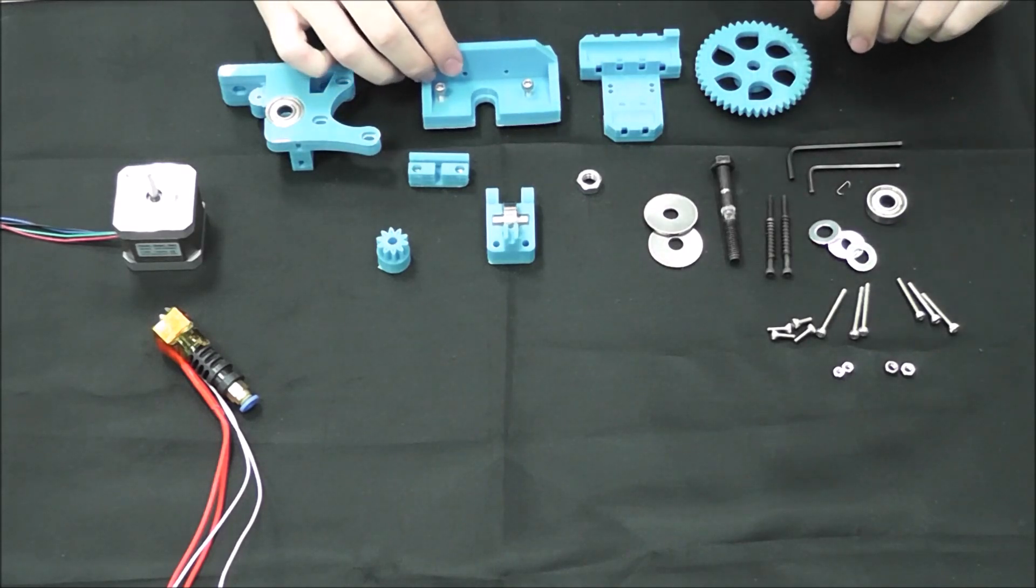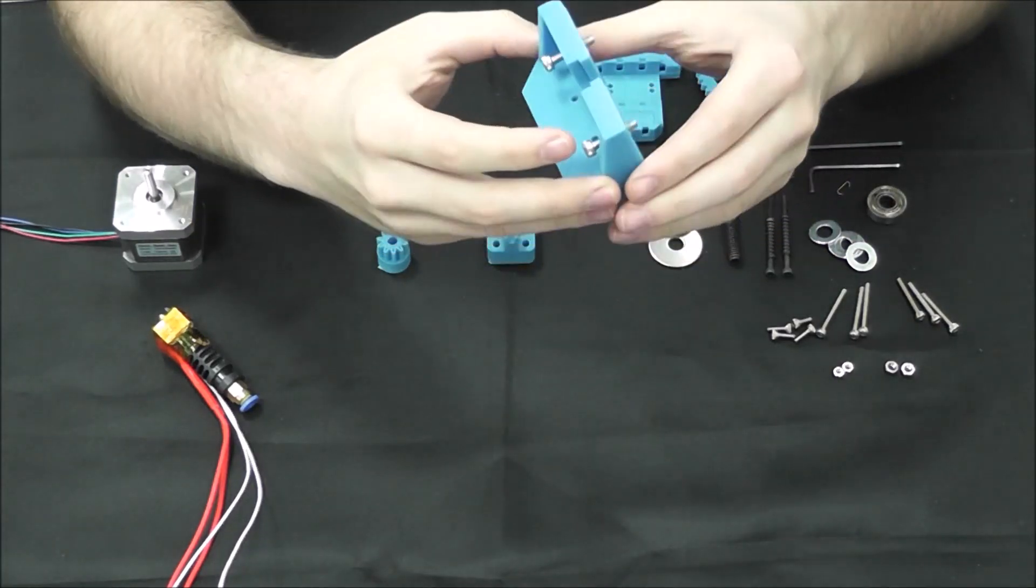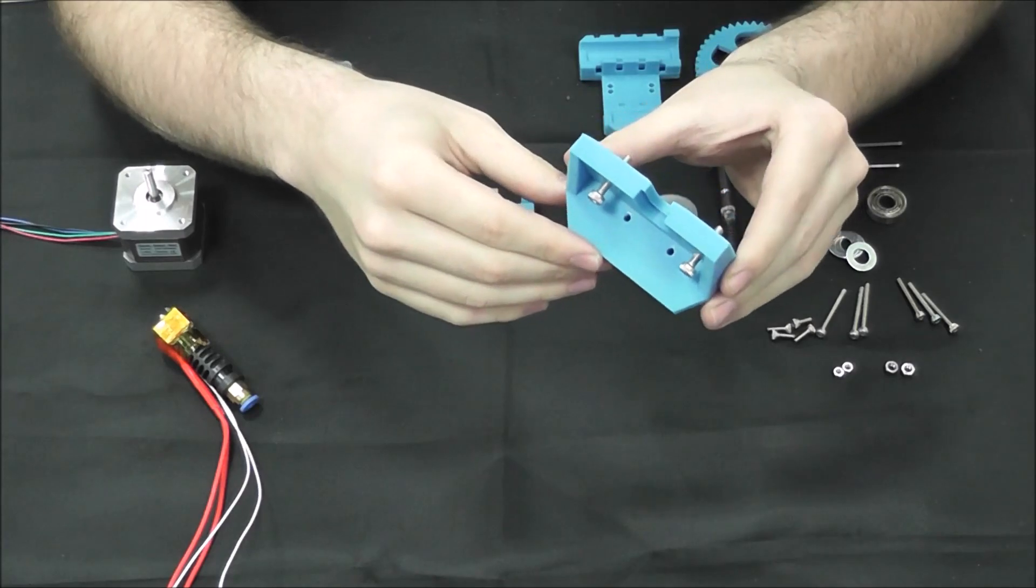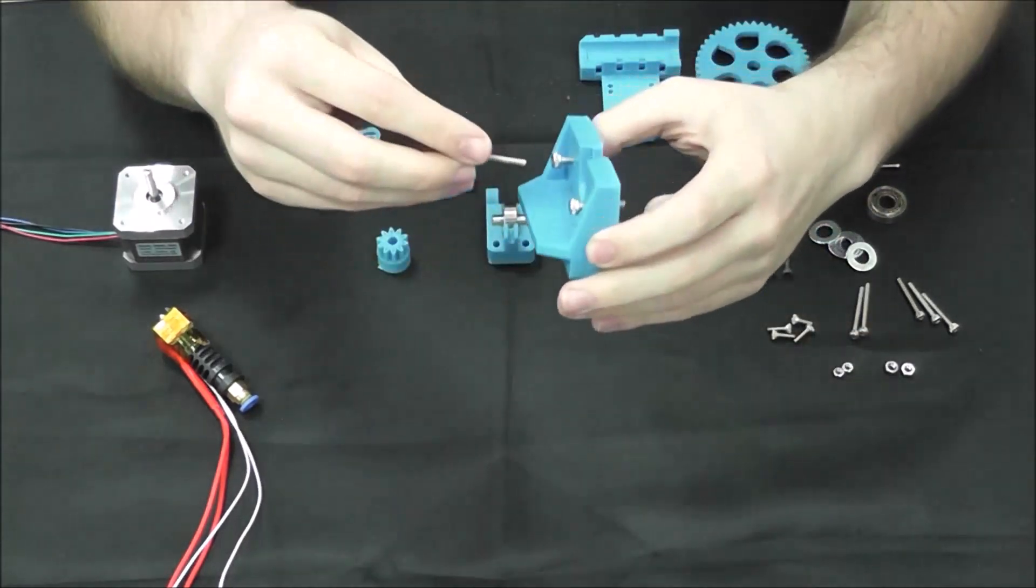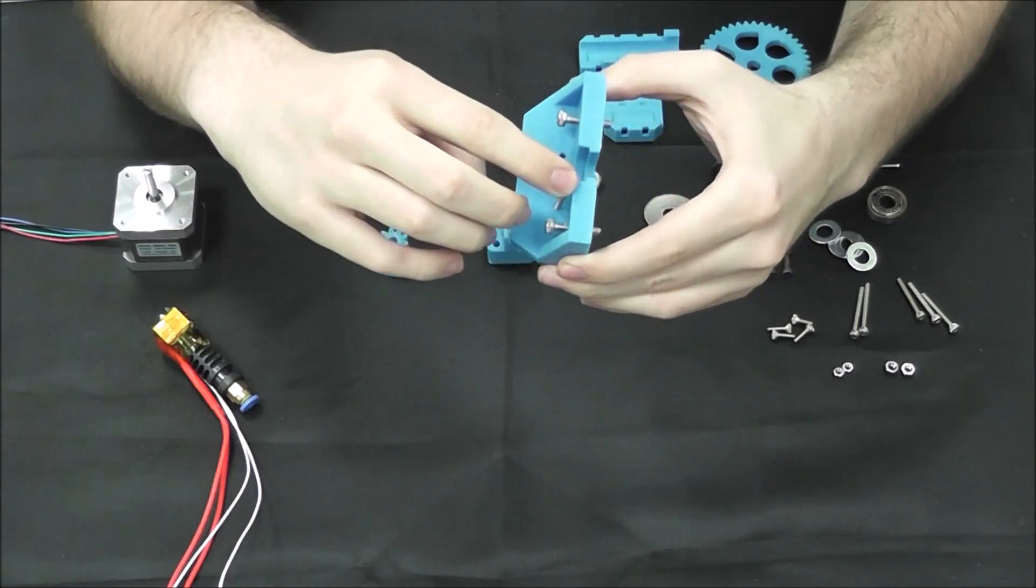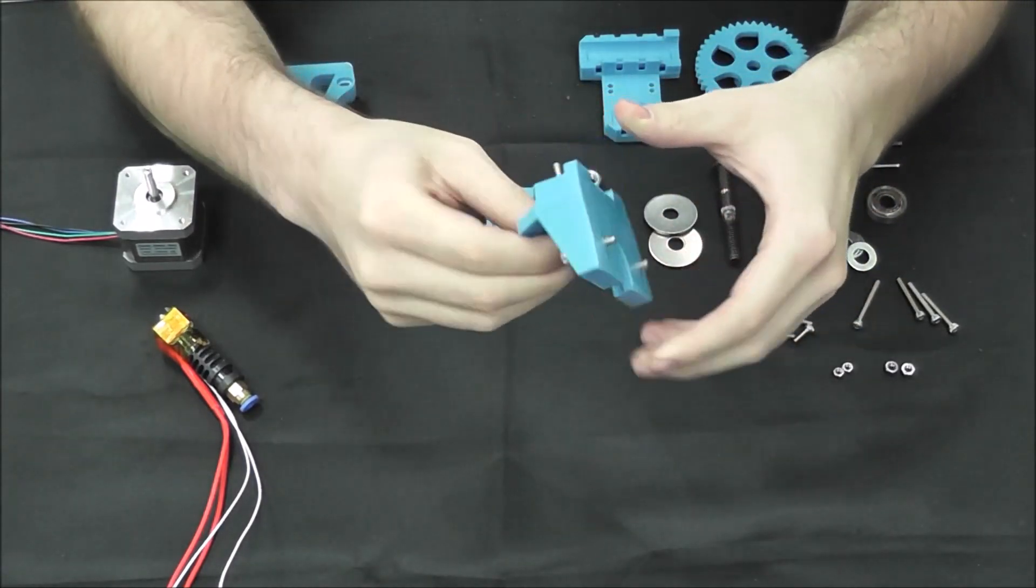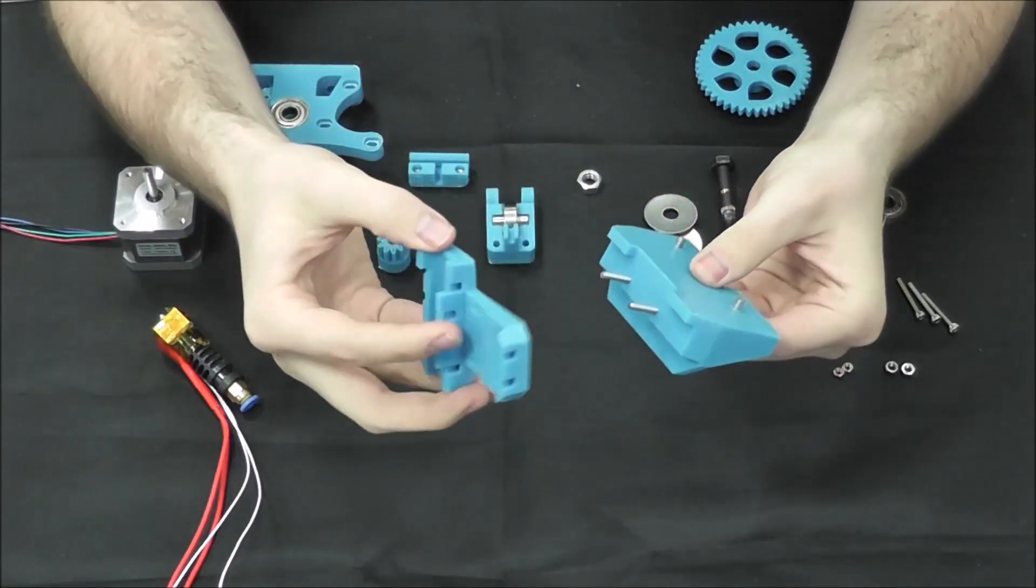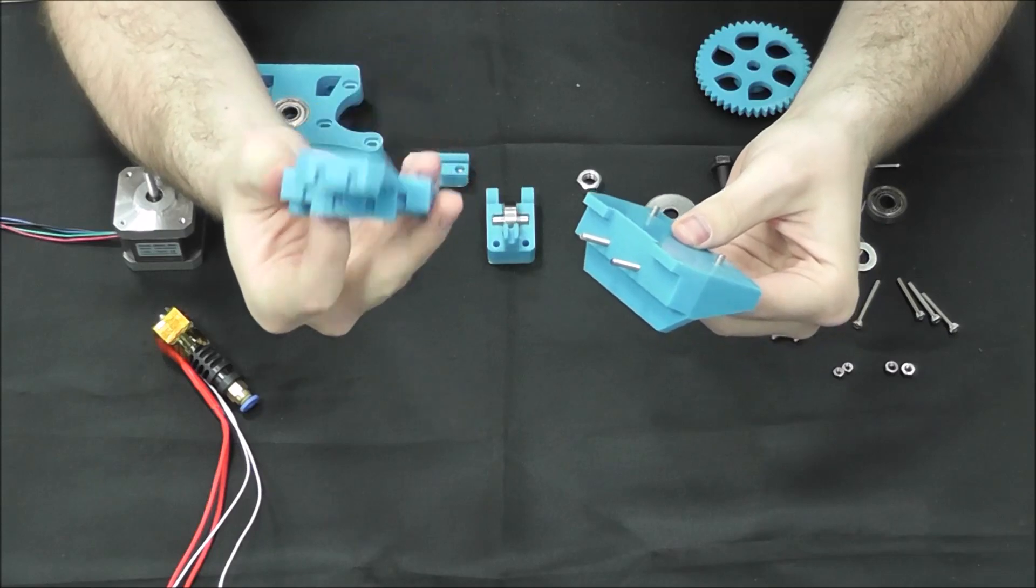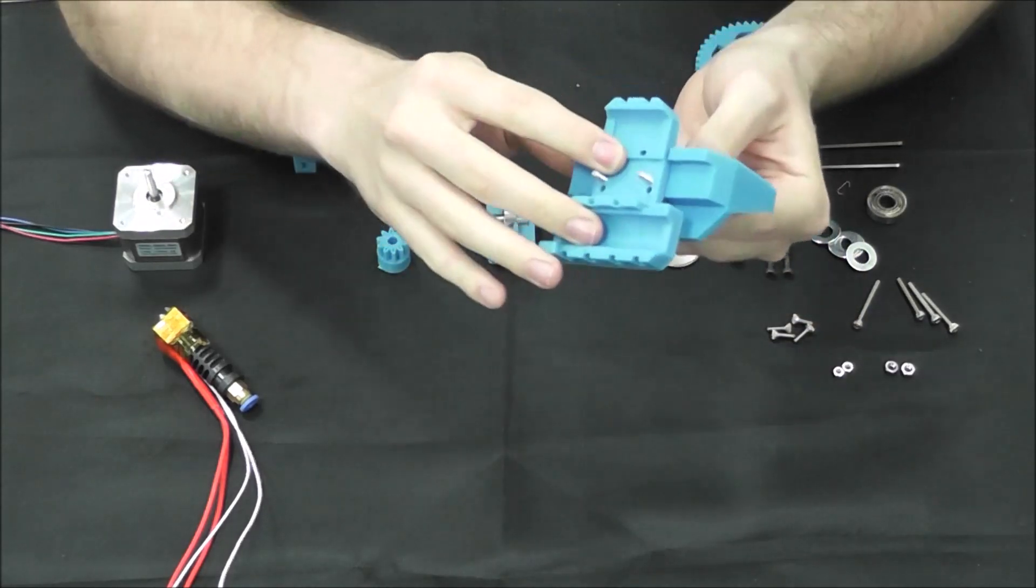So first what we're going to do is assemble the X carriage onto the extruder adapter. With these two empty holes right here we're going to slide our M3 30 millimeters through there. Next we're going to take the X carriage with the two linear bearing slots downwards and put it on like such.